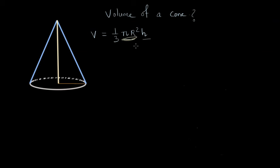Let's just focus on π r². This π r² basically refers to the area of the bottom of the cone which is circular, and that's why it's π r².